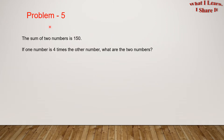Problem 5. The sum of two numbers is 150. If one number is four times the other number, what are the two numbers?